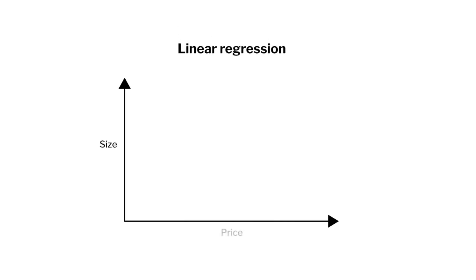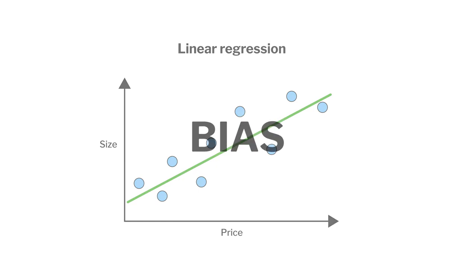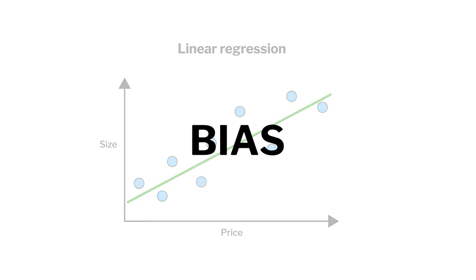Using linear regression on training data, you can create a line of best fit. The line doesn't fit perfectly to the data, and therefore the model doesn't accurately represent the relationship between the two variables. Because of this, the model has bias.